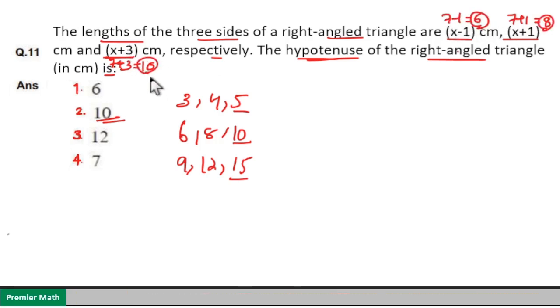So 6, 8, 10, which means the hypotenuse here is equal to option 2, 10. Just go for the option verification.